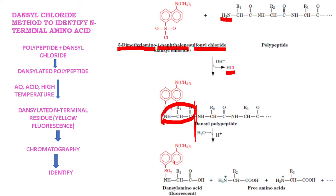We can identify this danzylated N-terminal amino acid after its chromatographic separation from the rest of the amino acids. This is a fluorescent amino acid because of the danzyl group — the whole molecule is fluorescent, which means it glows in darkness. That makes it very convenient to identify by means of chromatography.